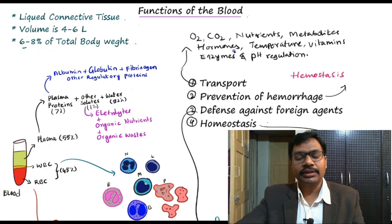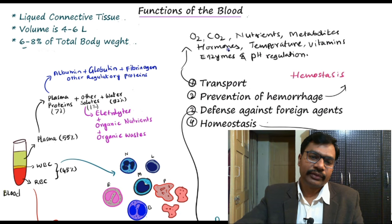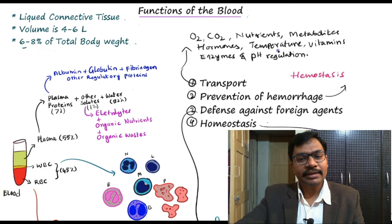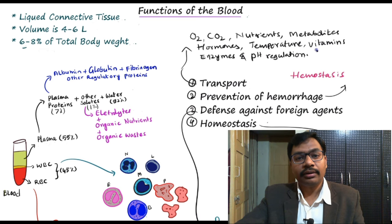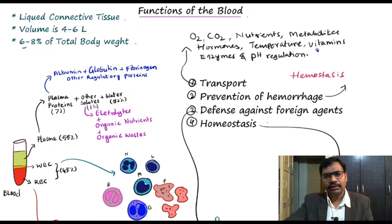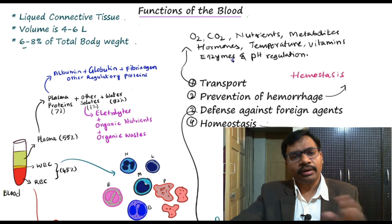Blood transports hormones — for example, thyroid hormone secreted from the thyroid gland has to be carried to every corner of the body, and this transportation is handled by our blood. Maintenance of body temperature is also one of the main functions of blood. Vitamins absorbed from the gastrointestinal tract are carried to other parts of the body for metabolic processes, and enzymes also need to move from one place to another for general metabolic processes.